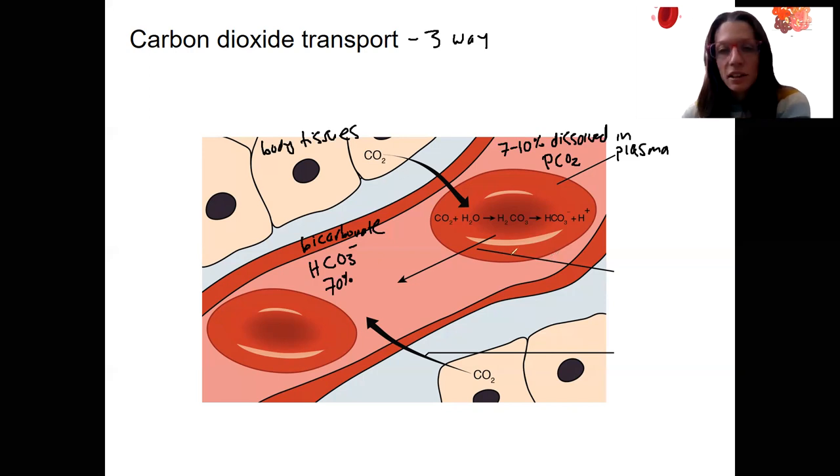Then lastly, we've got bound to hemoglobin. So 1, 2, 3, about 20% is going to be bound to hemoglobin. That's HbCO2.